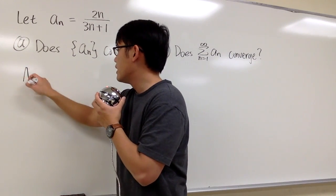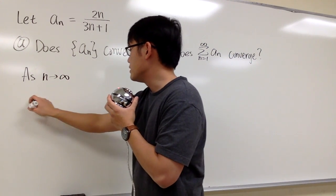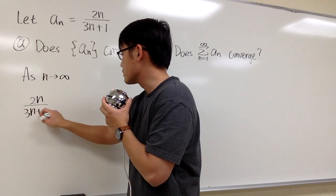So let's go ahead and compute our limit. I'll just write down as n goes to infinity, and I'll put on this expression right here, 2n over 3n plus 1.